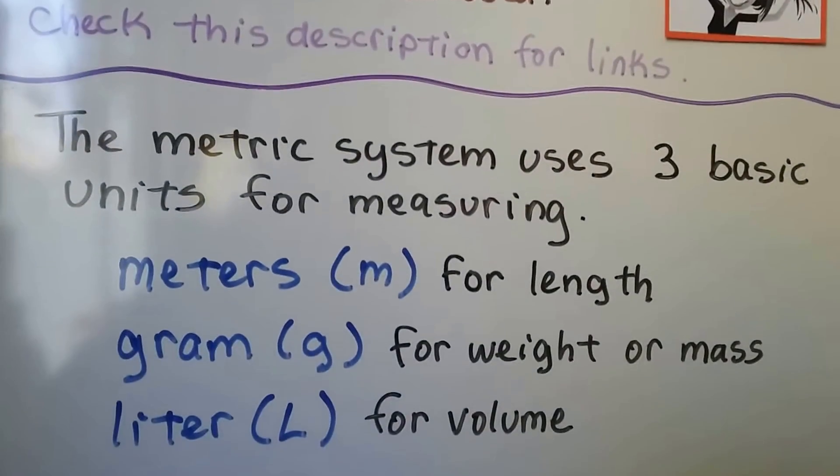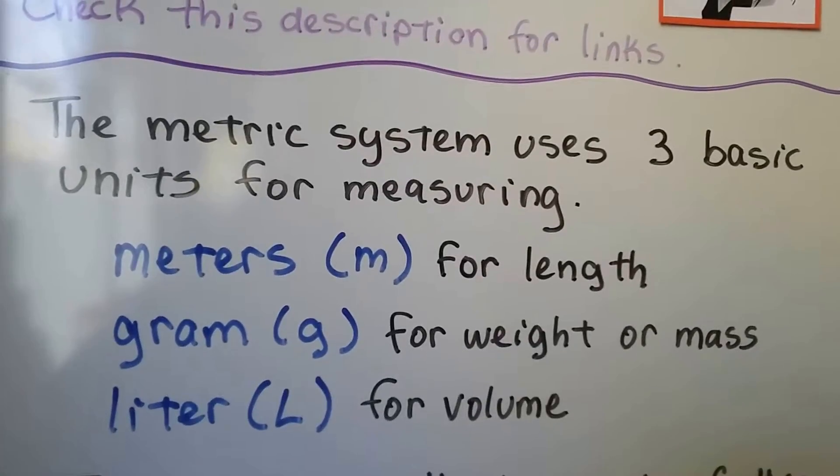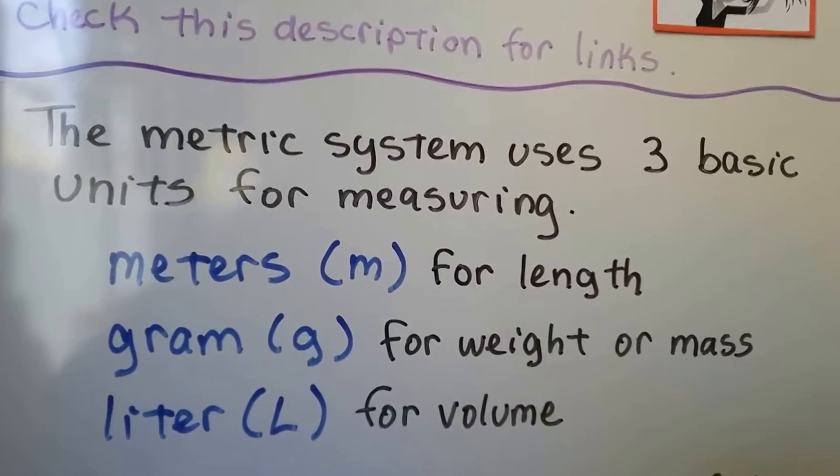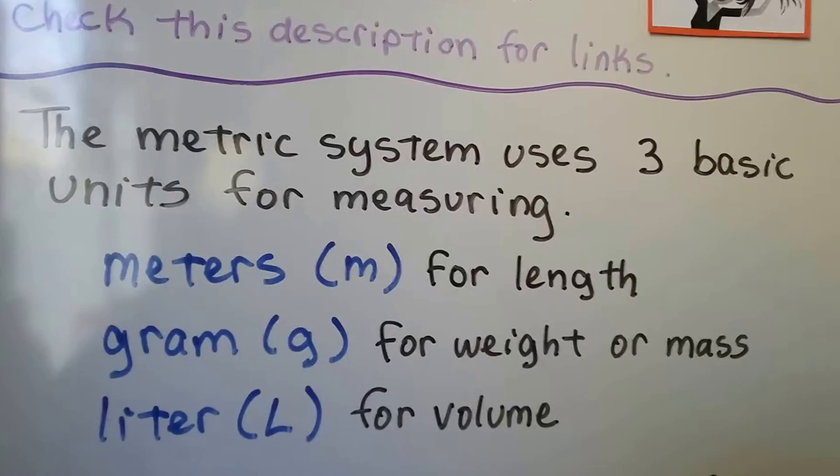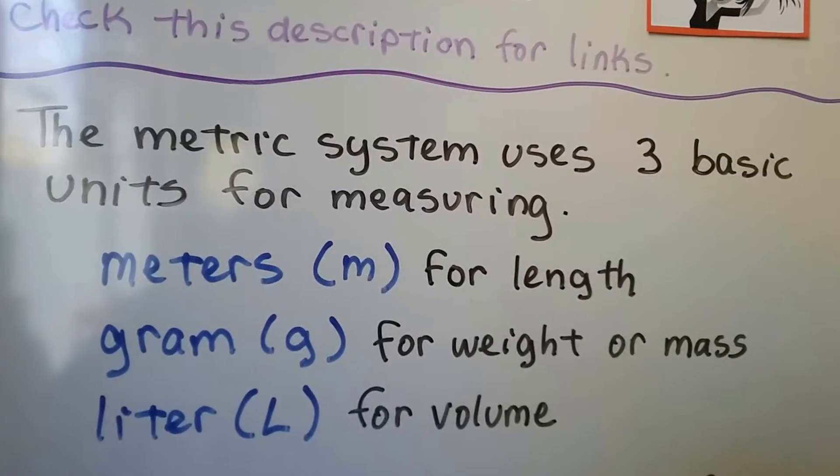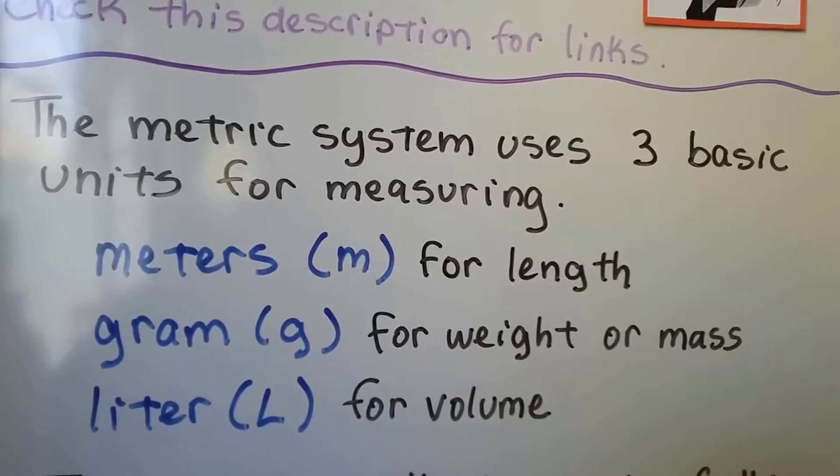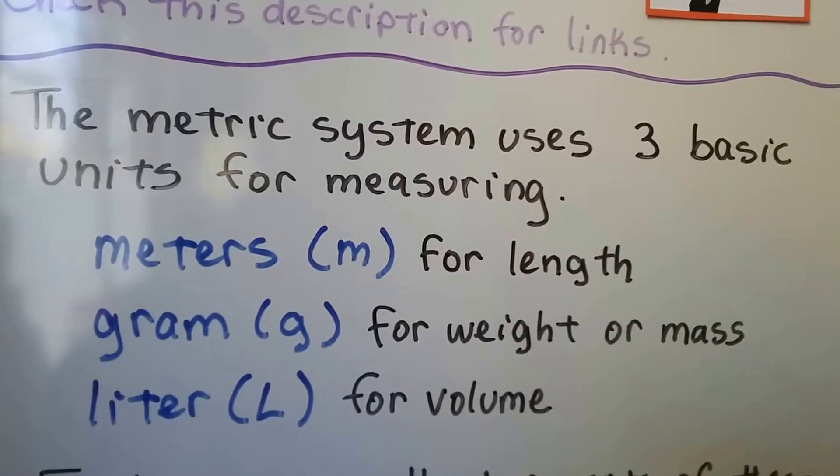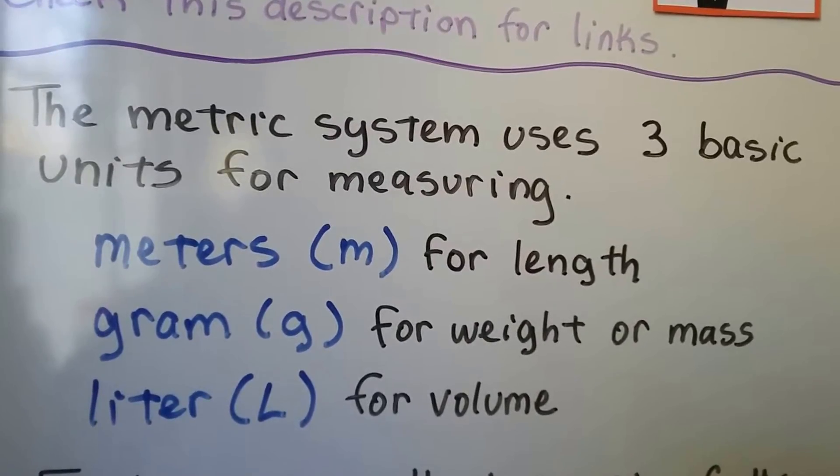The metric system uses three basic units for measuring. Meters, which has an abbreviation of m, that's for length. Gram, that has an abbreviation of g, that's for weight or mass. Liter, that's an abbreviation of l, is for volume.